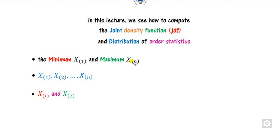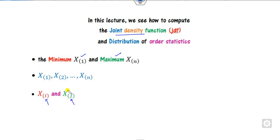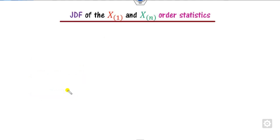In this lecture we will see how you can compute the joint density functions between the minimum and maximum, between the n variables, or between any two variables X(i) and X(j).